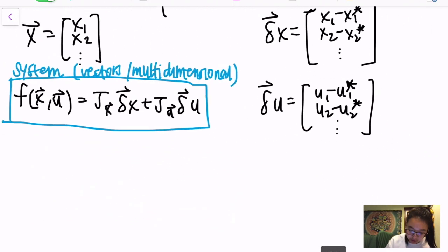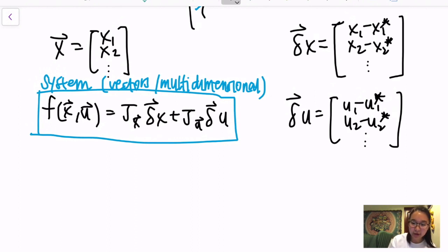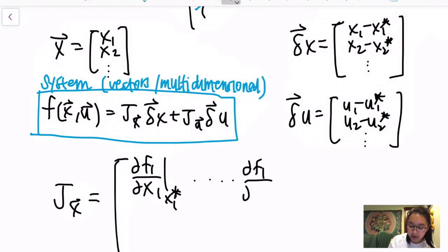For the Jacobian, it has a general form of, for J with respect to x for example, it is all the partial derivatives. That means you have df1/dx1 evaluated at x1* all the way to df1/dxn evaluated at xn*. Then going vertically down you go all the way to dfm/dx1 evaluated at x1*, which leaves this to be dfm/dxn evaluated at xn*.